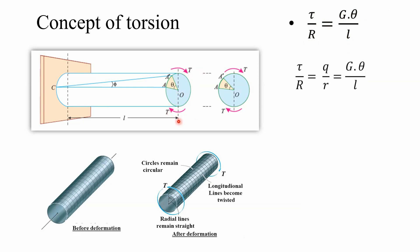From this relation we can conclude that shear stress will be maximum at the outermost layer of the shaft. To find shear stress intensity at any internal layer inside the shaft, we can directly use the relation: tau by R equals q by r, which equals G theta by L — where q is the shear stress intensity at any internal radius r, and tau is the shear stress at the outermost layer for radius R.